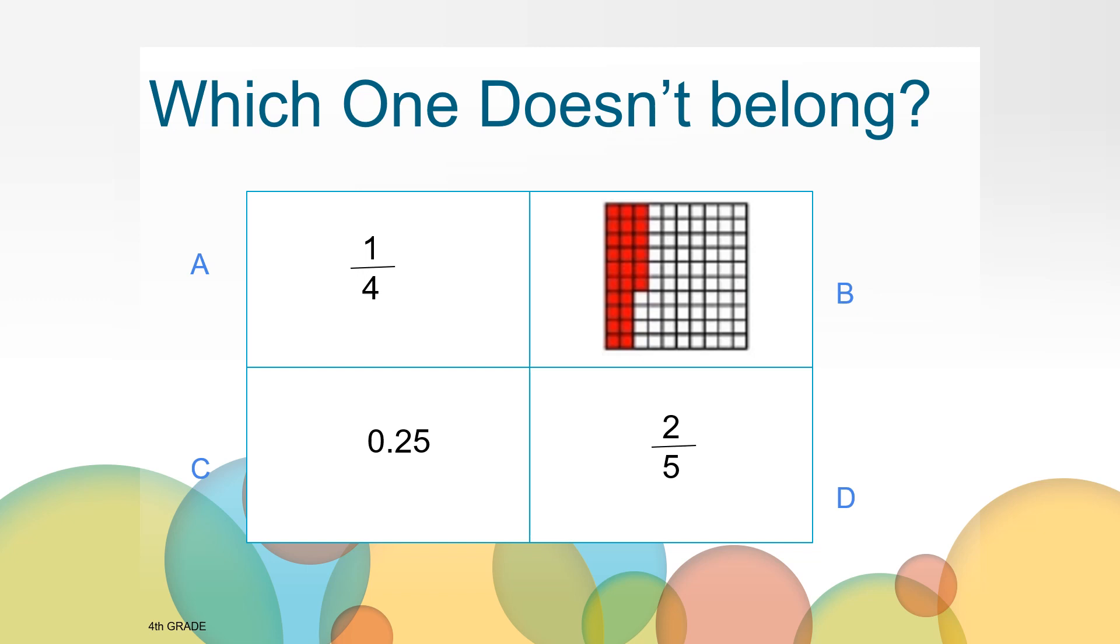Maybe you chose B as the one that doesn't belong because it is the only one that has a picture. Perhaps you said C doesn't belong because it is the only one in decimal form. You could have said that D doesn't belong because it is the only one that doesn't represent 25 hundredths. Or maybe you said A doesn't belong because it has the digits 1 and 4 and the rest of the pictures show 2 and 5.